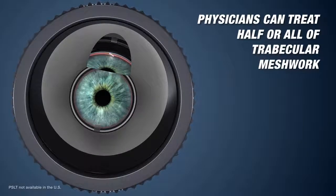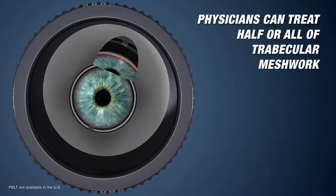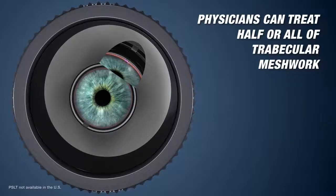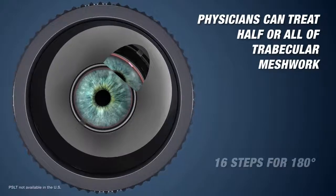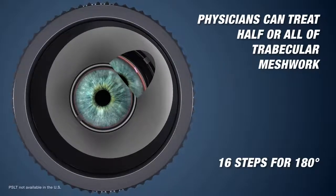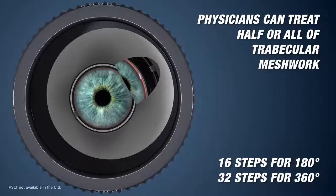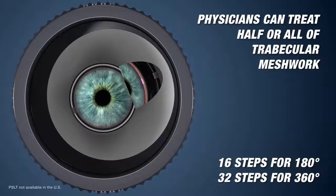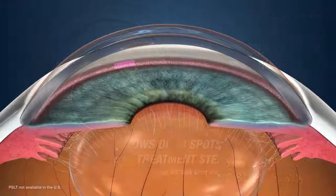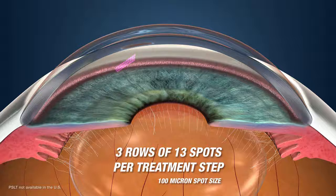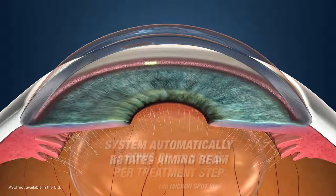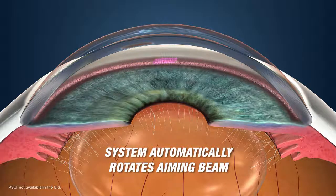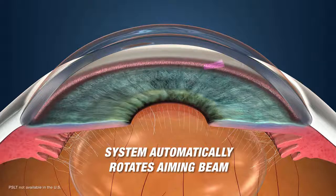Physicians can choose to treat either half or all of the trabecular meshwork. Treatment is administered in 16 steps for 180 degrees, or 32 steps for 360 degrees. There are 3 rows of 13 spots per treatment step, and the system automatically rotates the aiming beam pattern, allowing for precise and accurate alignment and delivery of the treatment patterns onto the trabecular meshwork.